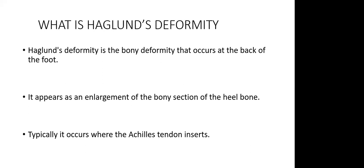By definition, Haglund's deformity is a bone deformity that occurs at the back of the foot. It typically involves the adjacent structures — the retrocalcaneal bursa and the subcutaneous bursa. The main structure involved is the Achilles tendon. It's one of the thickest and strongest tendons in the lower limb, posterior to the leg. It has an origin and an insertion that must be understood.